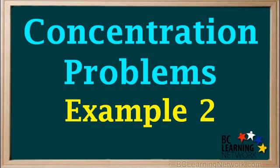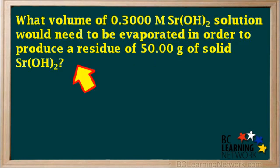This video will go through an example of finding the volume of a solution that must be evaporated to produce a solid residue of a given mass. What volume of 0.3 molar strontium hydroxide solution would need to be evaporated in order to produce a residue of 50 grams of solid strontium hydroxide?